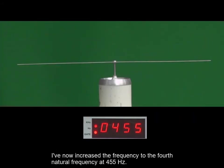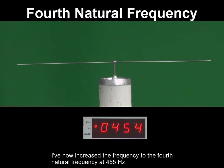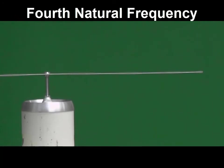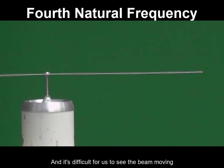I've now increased the frequency to the fourth natural frequency at 455 Hz, and it's difficult for us to see the beam moving. Let's look at a different way to find node lines.